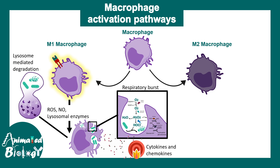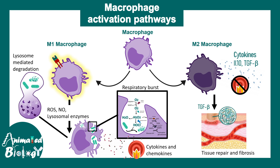In contrast, M2 macrophages secrete cytokines which are anti-inflammatory in nature, so their role in immune modulation is essentially the reverse of M1 macrophages. They also secrete TGF-beta, which acts as a tissue repair and fibrosis modulator. M2 macrophages therefore have important functions in wound healing, tissue repair, and fibrosis.